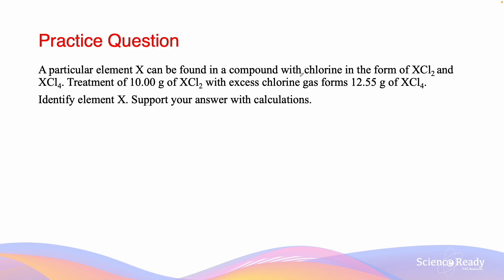A particular element X can be found in a compound with chlorine in the form of XCl2 as well as XCl4. Treatment of 10 grams of XCl2 with excess chlorine gas forms 12.55 grams of XCl4. Identify element X and support your answer with calculations.